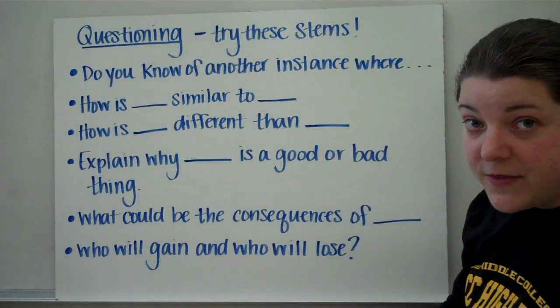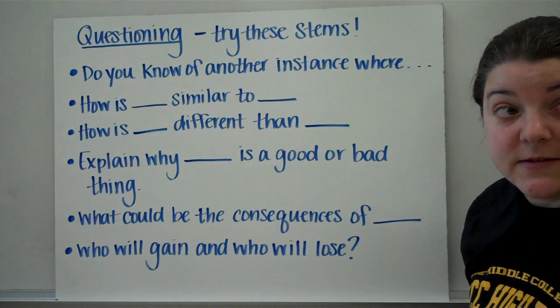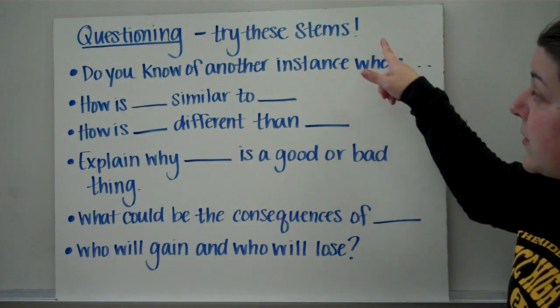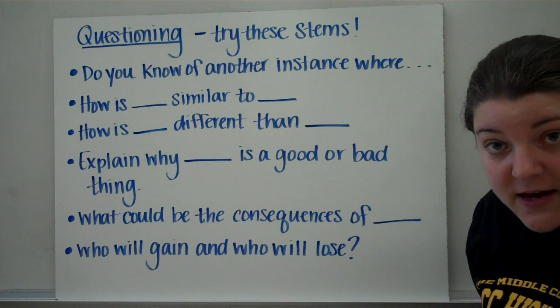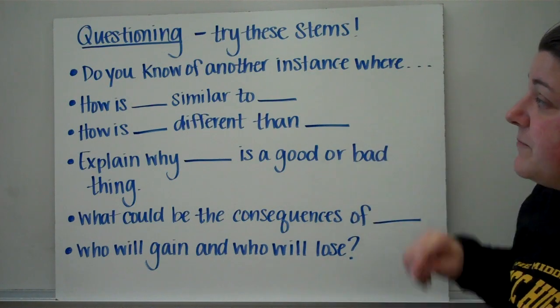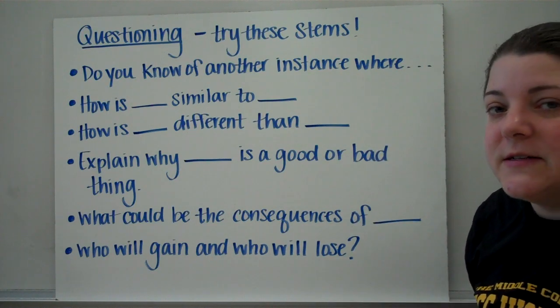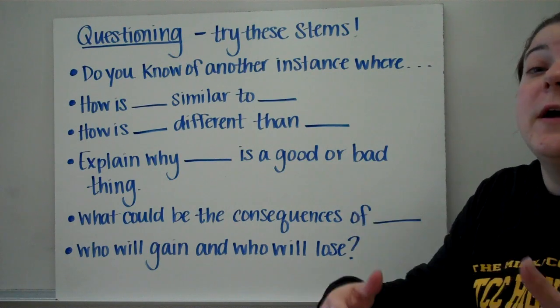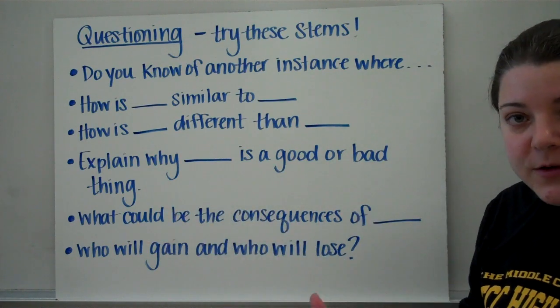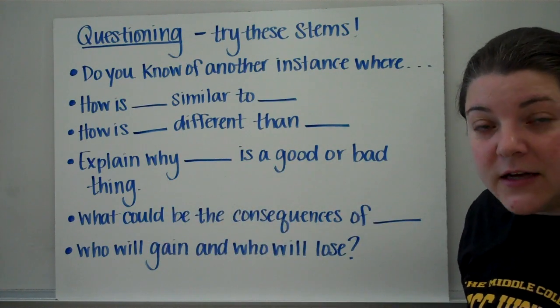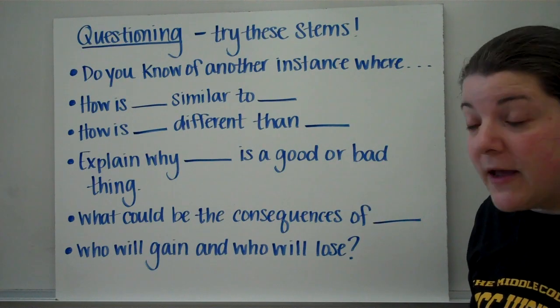Questioning is another thing that you can use in order to work this skill. With questioning, you want to try these particular stems like 'Do you know of another instance when?' And you would add when what? And you would definitely begin then to answer that question, and that would help you make a connection.